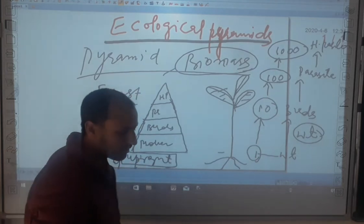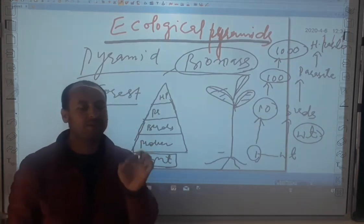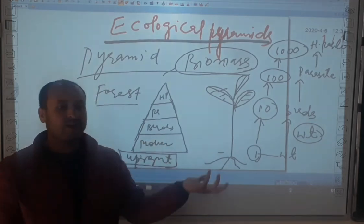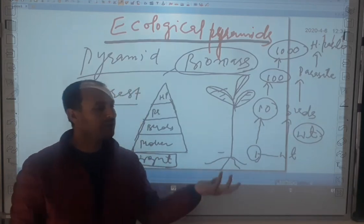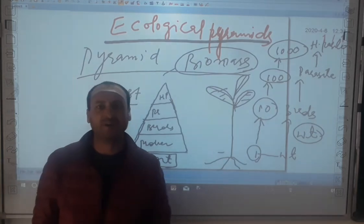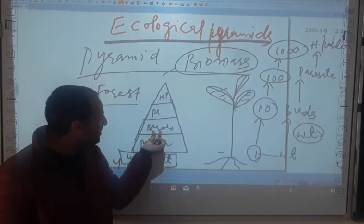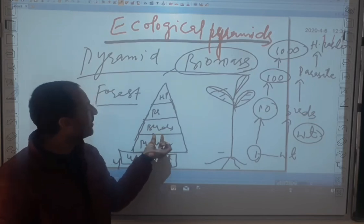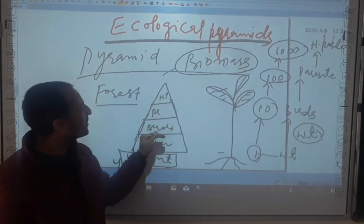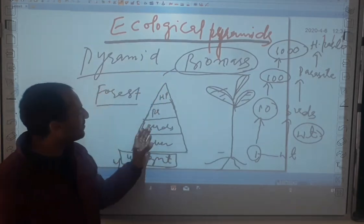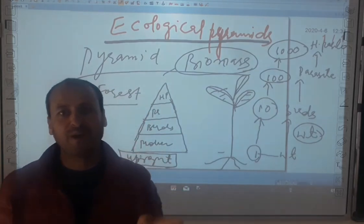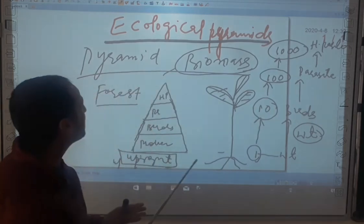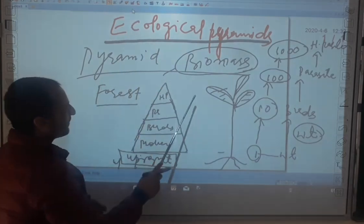In the case of a forest ecosystem, if we consider a single tree which has a large amount of biomass, and the birds living on that tree or in that forest comparatively have less biomass — that is why it depicts a smaller, comparatively smaller width. The width goes on decreasing as we move from producer toward the apex successive consumer level. So in the case of a forest ecosystem, the pyramid of biomass formed is an upright or straight pyramid.